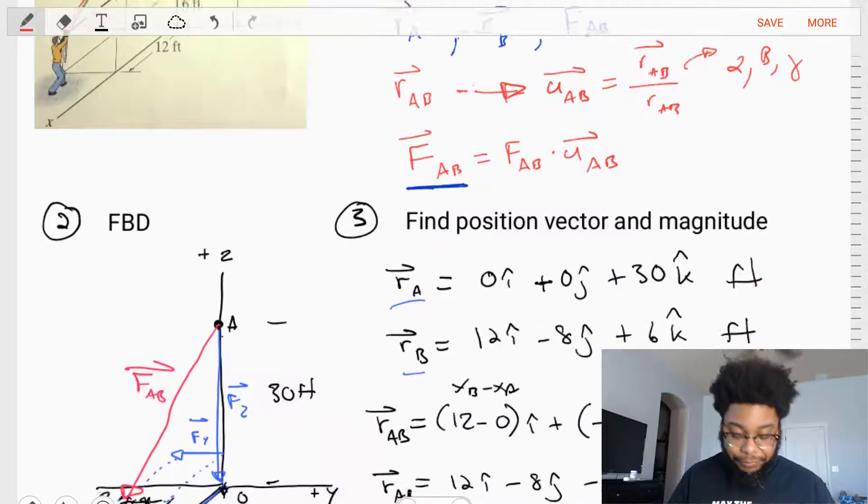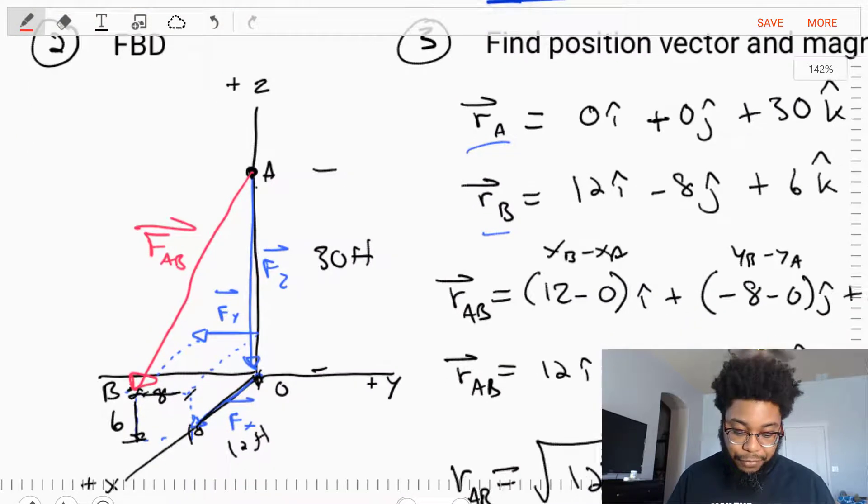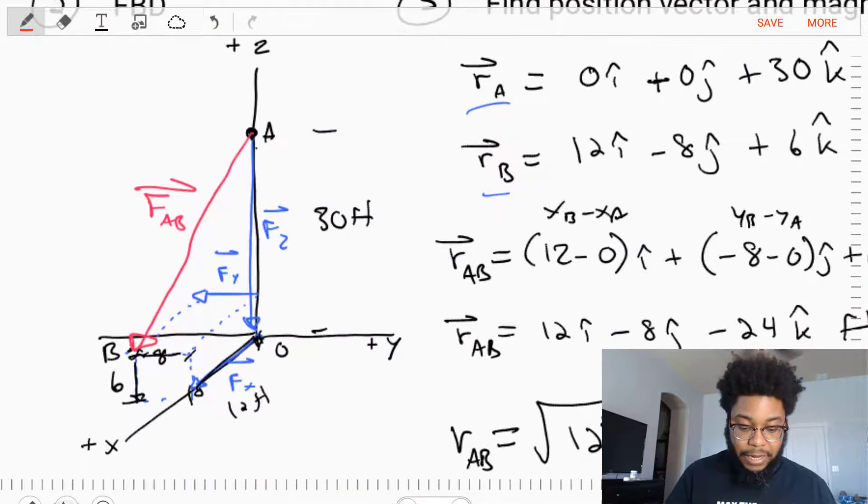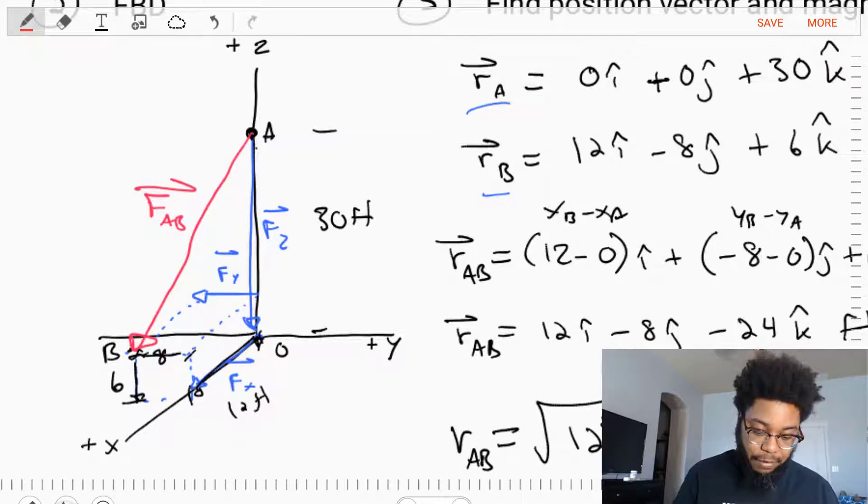Let's take this problem and simplify it by creating a free body diagram. It's an XYZ coordinate system. We're going to just draw that unknown vector FAB and then put on our dimensions where A is and where B is.